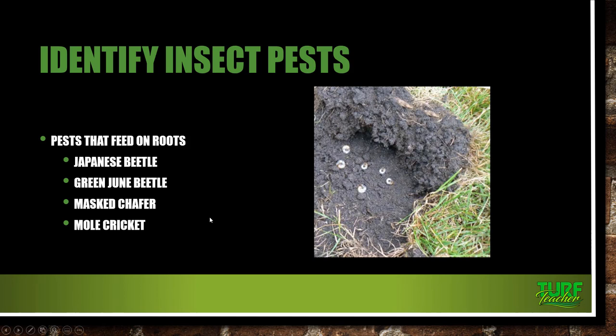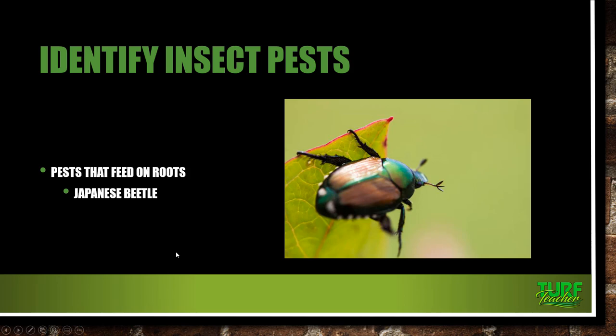Pests that feed on the roots — our grubs. We have the Japanese beetle, the green June beetle, the masked chafer, and the mole cricket. The Japanese beetle is probably one of the coolest insects to collect as a child. They are detrimental to our roses, and in their larval stage, they are detrimental to our turf grasses. When adults, they're shiny green with a copper-colored wing. The whitish grubs are C-shaped — that's one way to identify them — about one inch long with a yellowish brown head.